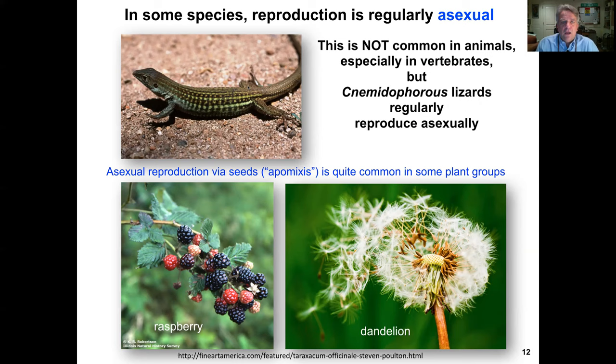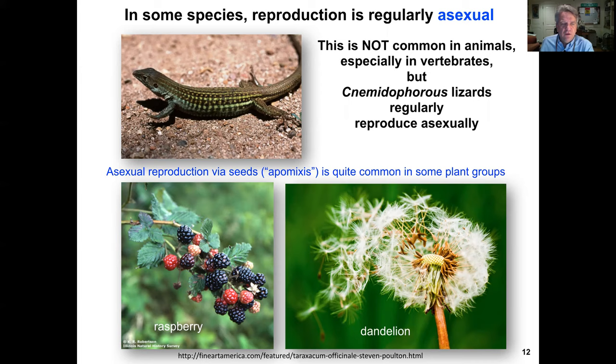Asexual reproduction can also happen via seeds through apomixis, which is actually quite common in some plant groups, including raspberry and dandelion.